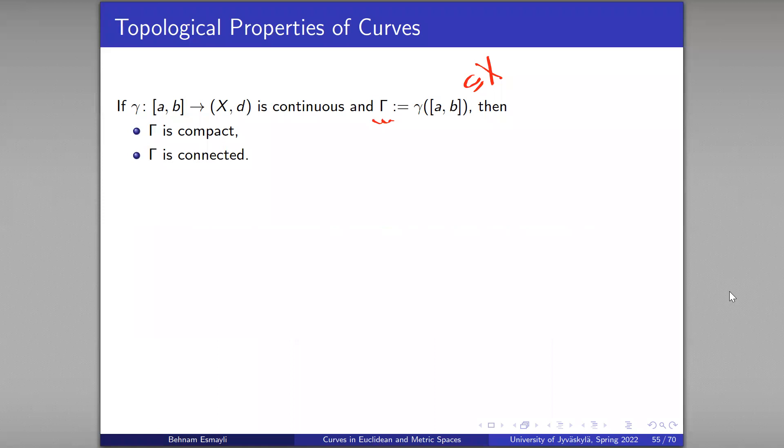What we know about this set just from gamma being continuous is that Gamma is compact and it is connected. And that's basic exercises in any analysis or topology course, proving that these properties are preserved under continuous maps.